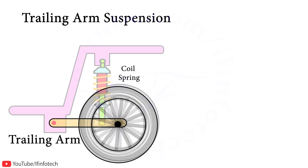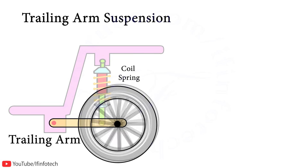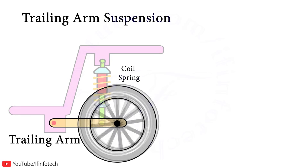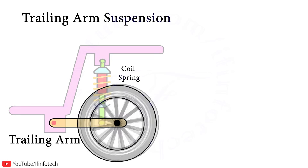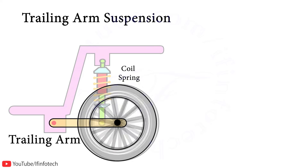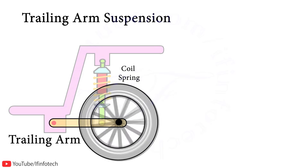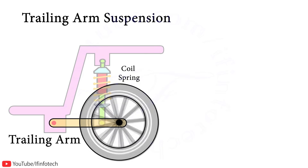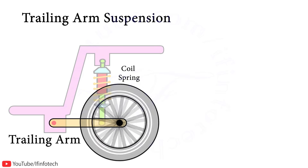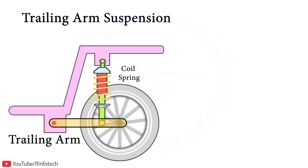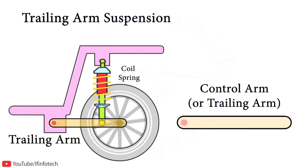Nevertheless, when the car rolls into a corner, the trailing arm rolls to the same degree as the car body, thus changing the camber angle. The trailing arm construction is very simple, and in trailing arm suspension, the control arms are strong and durable.